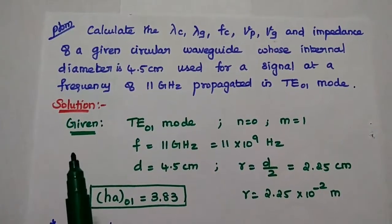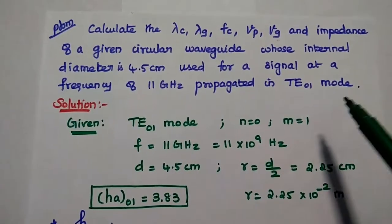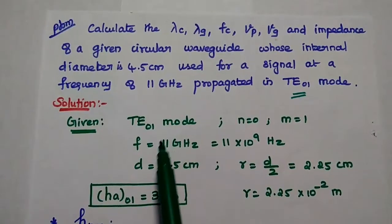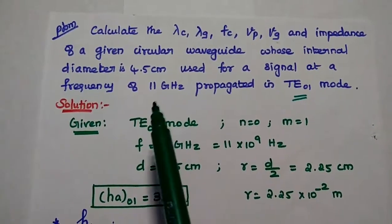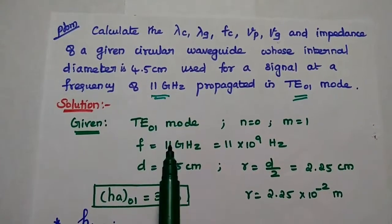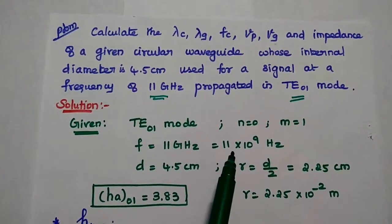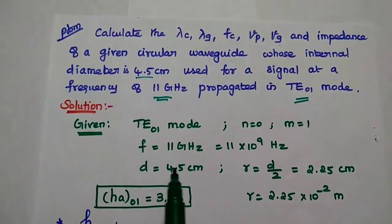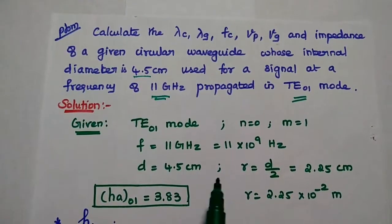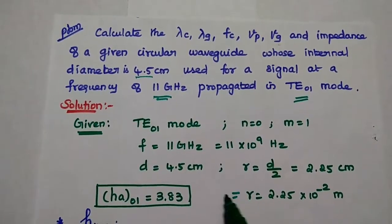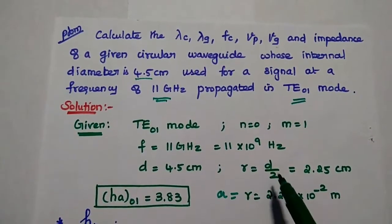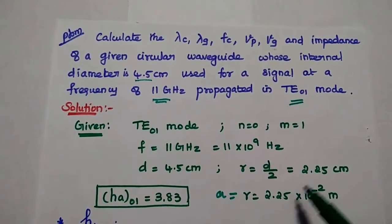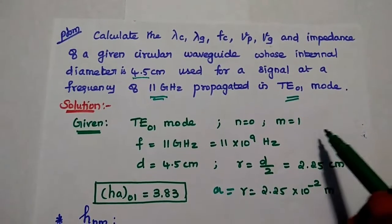In the solution, first we write the given data. The dominant mode is TE01, so n = 0 and m = 1. The operating frequency f = 11 GHz = 11×10⁹ Hz. The diameter is 4.5 cm, so the radius a = D/2 = 2.25 cm = 2.25×10⁻² meters.